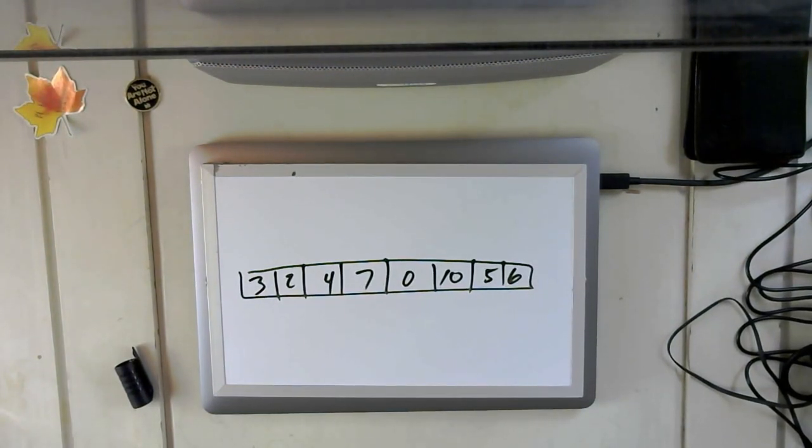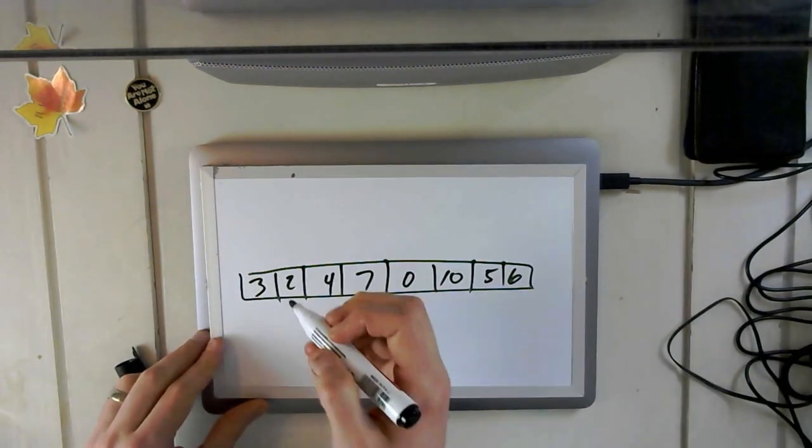both selection sort and insertion sort build a sorted portion of the array from the left moving to the right in every step. What's different about it is insertion sort always starts with the same value from the unsorted, and then needs to find where to put it in the sorted part. So in insertion sort, so let's take a step of insertion sort.